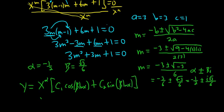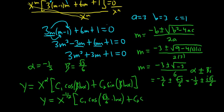Okay, so this will be y equals x to the negative 1 half bracket c1 cosine and then beta is the square root of 3 over 6. So we have that and then c2 sine and again beta is the square root of 3 over 6 and we have the ln x.